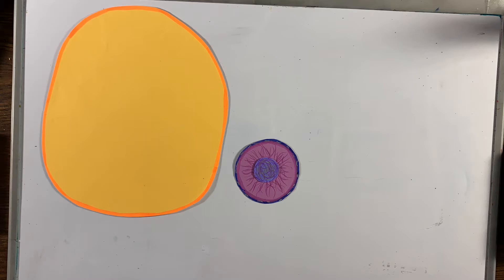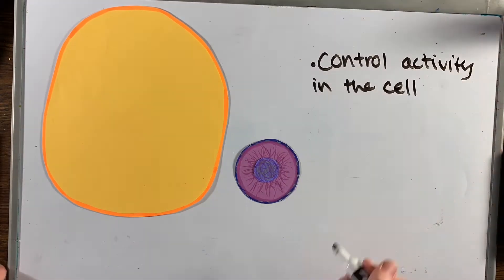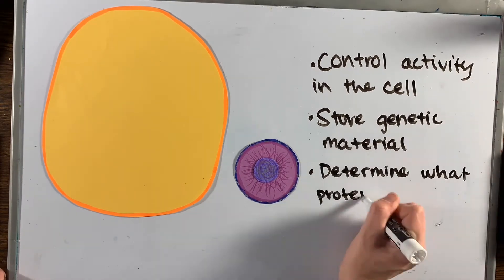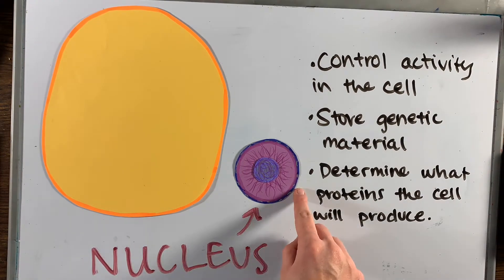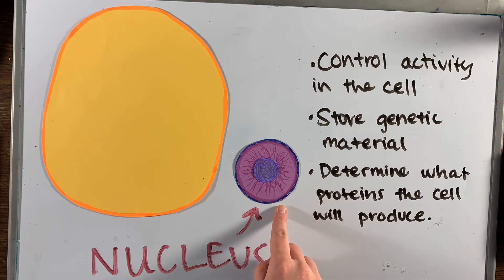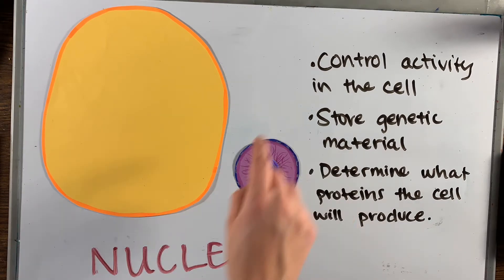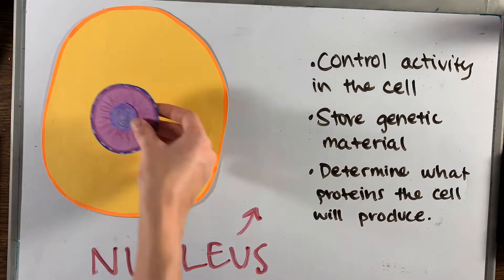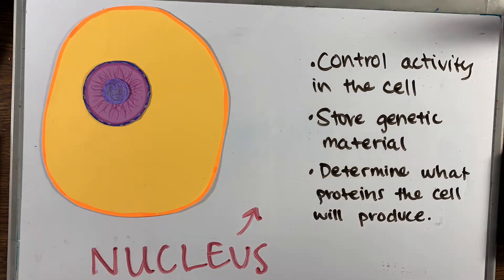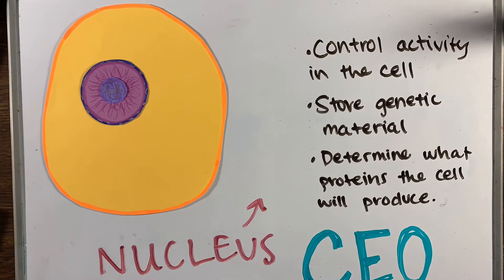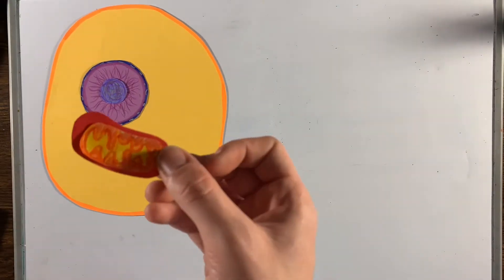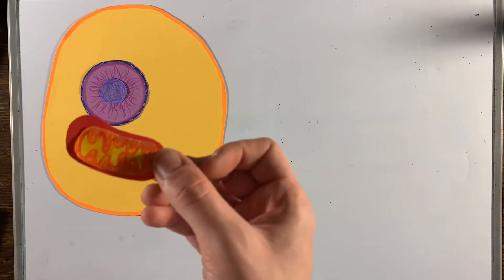The nucleus's primary roles are to control the activity in the cell, store genetic material, and determine what proteins the cell will produce. As you can see, it's surrounded by a double-layer nuclear membrane perforated by nuclear pores, and the envelope is continuous with the rough ER. All eukaryotic cells have nuclei. In our cell factory, the nucleus is going to be the CEO — the boss giving orders and being in charge of production.